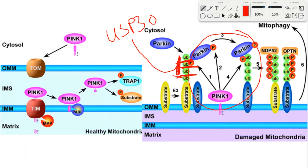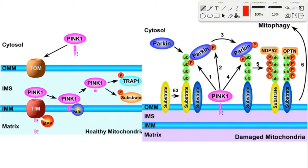Note that Parkin sounds suspiciously like Parkinson's disease — and that's because Parkin mutations are linked to Parkinson's disease. The common mutations observed in Parkin cause it to be significantly harder to activate, and thus the rate of mitophagy is generally much lower, which is hypothesized to lead to the accumulation of ROS-spewing damaged mitochondria, and this leads to disease.